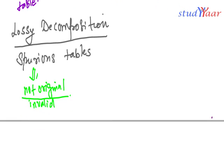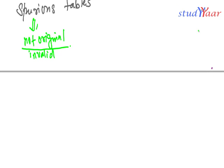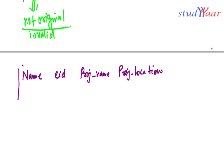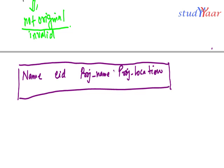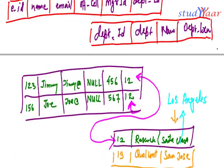Let's see how we have this problem in a relational schema. Suppose I have a table with employee name, employee ID, project name, and project location. This table is storing information about the person, which project they are working on, and where that project is located.